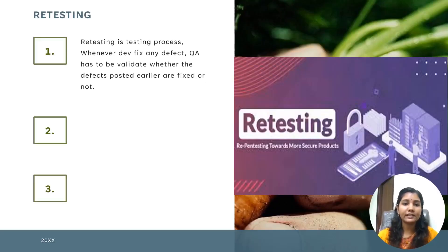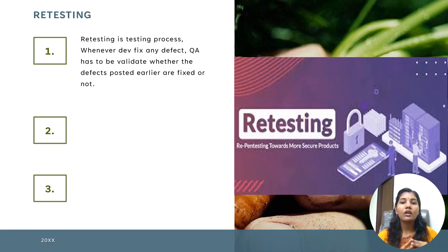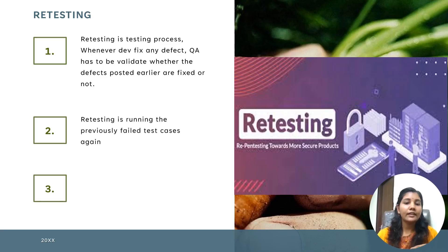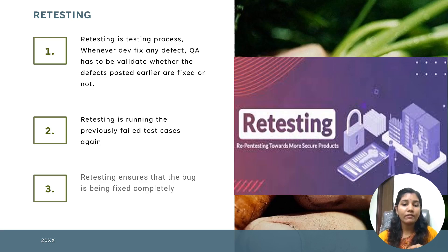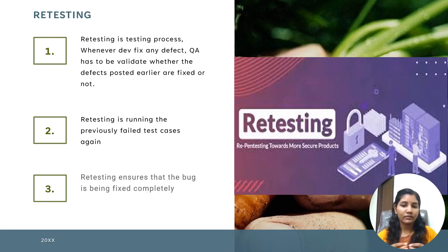What is retesting? Retesting is the testing process where, whenever a developer fixes any defect, QA has to validate whether the defects that failed earlier are fixed or not. So basically, we report a defect to the developer, get a fix, and then validate that the defect is gone. Retesting means running the previously failed test cases again to ensure that the issues are fixed completely.